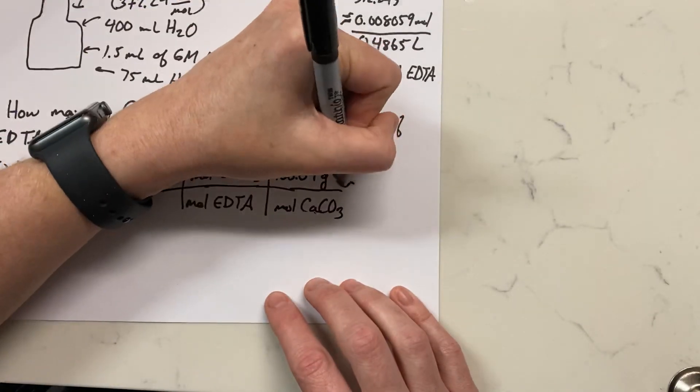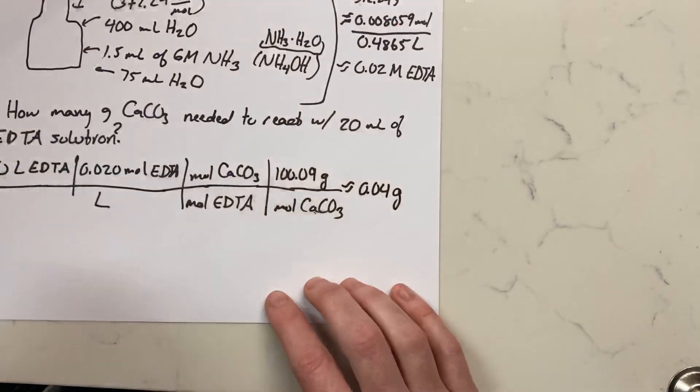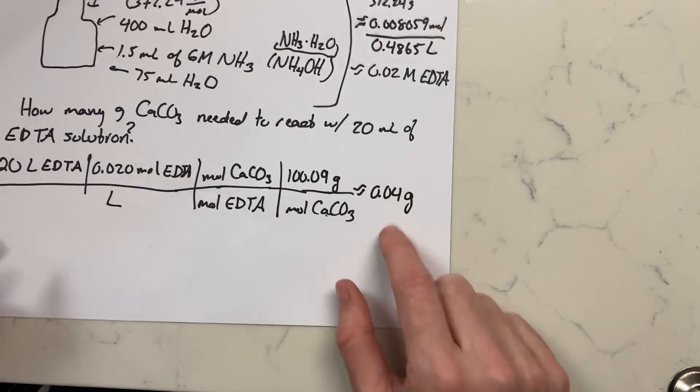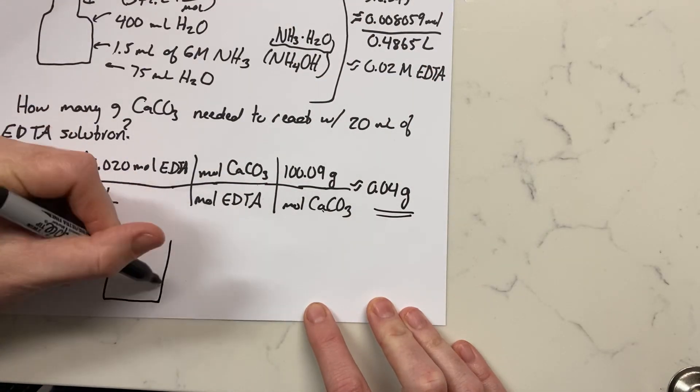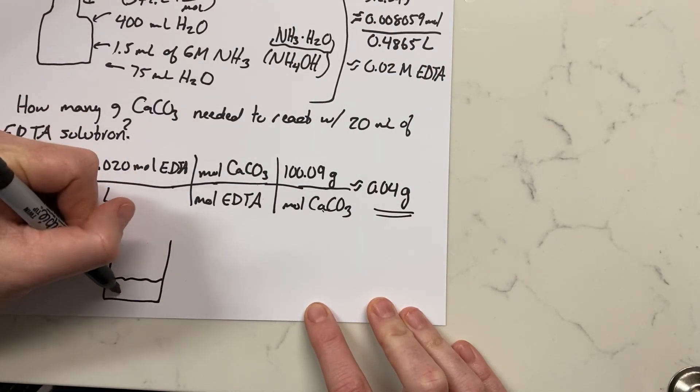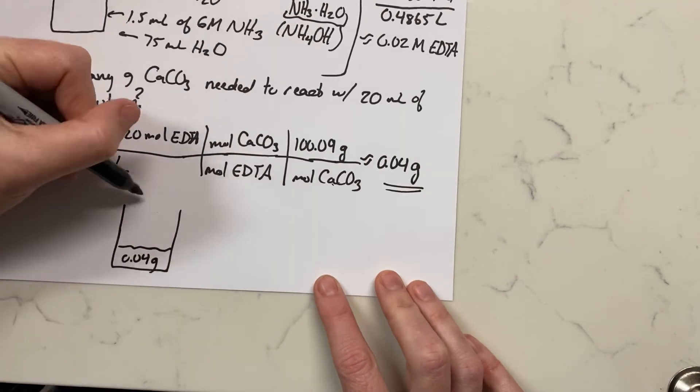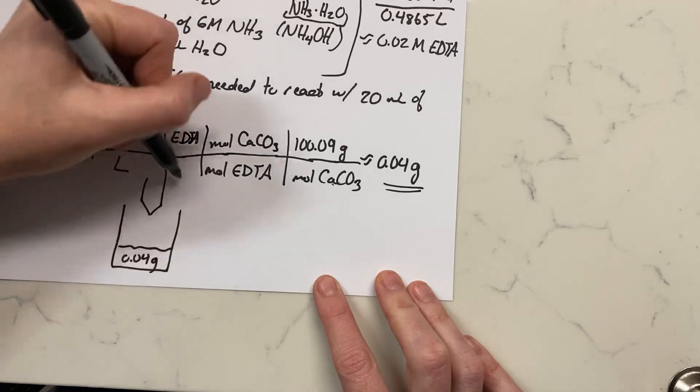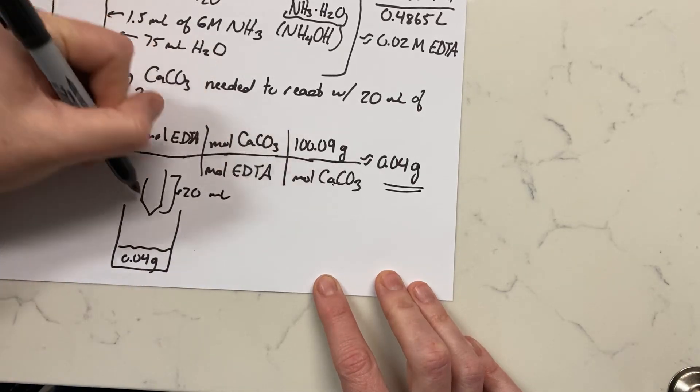And if you calculate this out, you get 0.04 grams of calcium carbonate is needed. So this is how many grams we're going to want to have in our solution that we're going to titrate with EDTA in order to use about 20 milliliters of this EDTA solution.